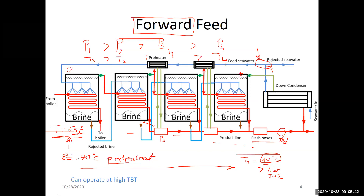Flow goes naturally from a high pressure to a low pressure site. The seawater is sprayed, part of it evaporates, and the rest is rejected as brine and sprayed in the next effect. A small portion of the vapor is taken for preheating the feed, where it condenses, and the rest enters inside the tubes of the next effect, which is at a lower pressure and temperature.